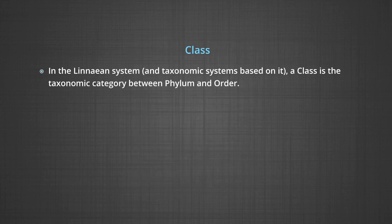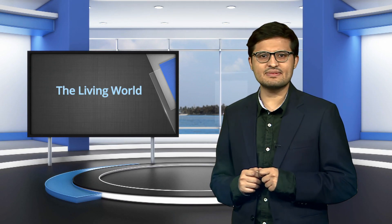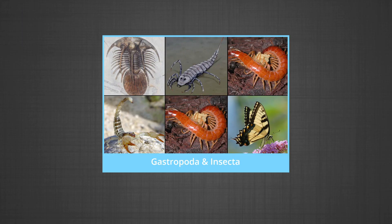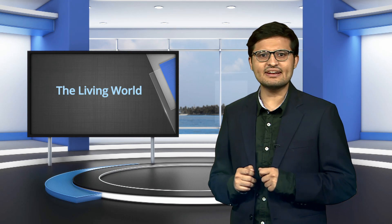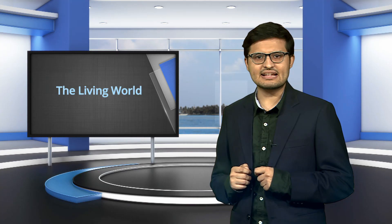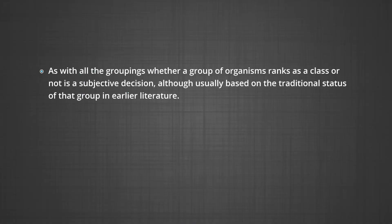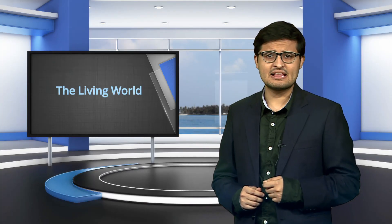Class is a taxonomic category between phylum and order. A class is a major group of organisms — examples include Mammalia, Reptilia, Gastropoda, Insecta — that contains a large number of different sub-lineages but with shared characteristics in common. For example, warm-bloodedness, fur and mammary glands in females in the case of mammals, and six legs with three body parts in the case of insects. Whether a group of organisms ranks as a class is a subjective decision, usually based on traditional usage in earlier literature.